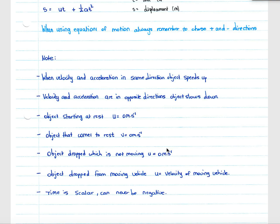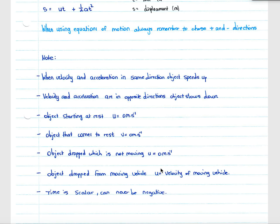When velocity and acceleration are in opposite directions, the object slows down. For an object starting at rest, u = 0 m/s. For an object that comes to rest, v = 0 m/s. For an object dropped from rest, u = 0 m/s. For an object dropped from a moving vehicle — such as a car, hot air balloon, or airplane — u equals the velocity of that moving vehicle. Remember that time is always scalar and can never be negative, so if a quadratic equation yields a negative time, discard it.